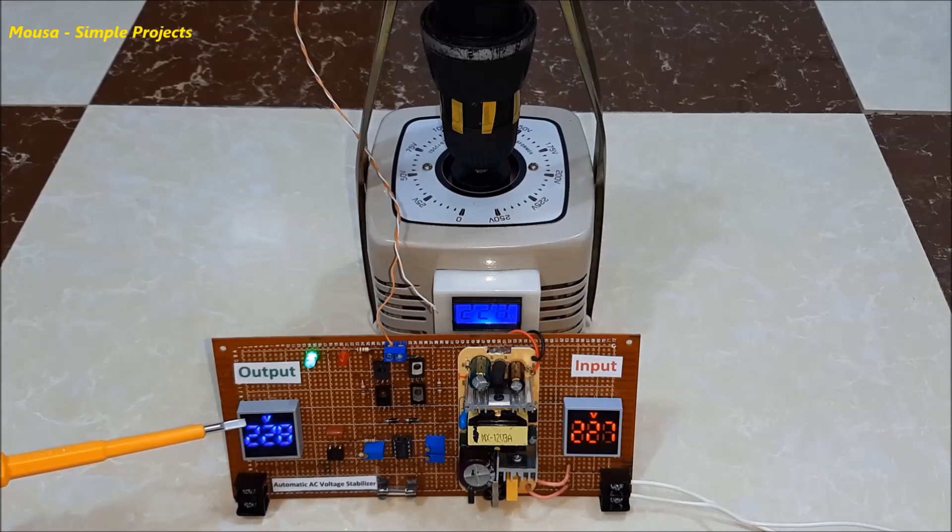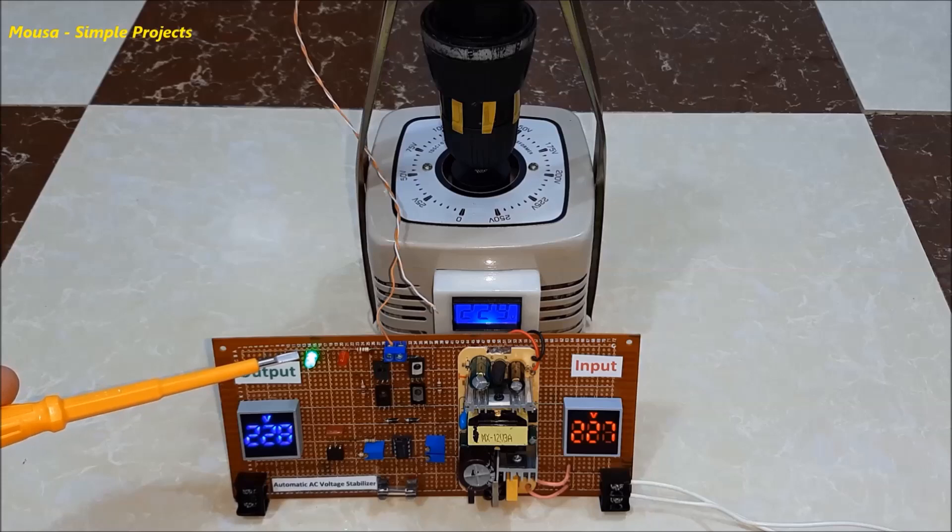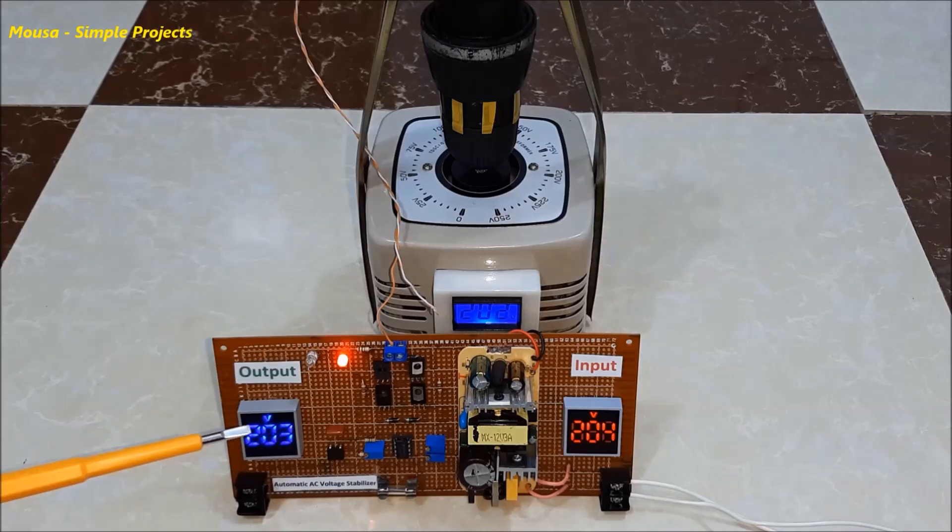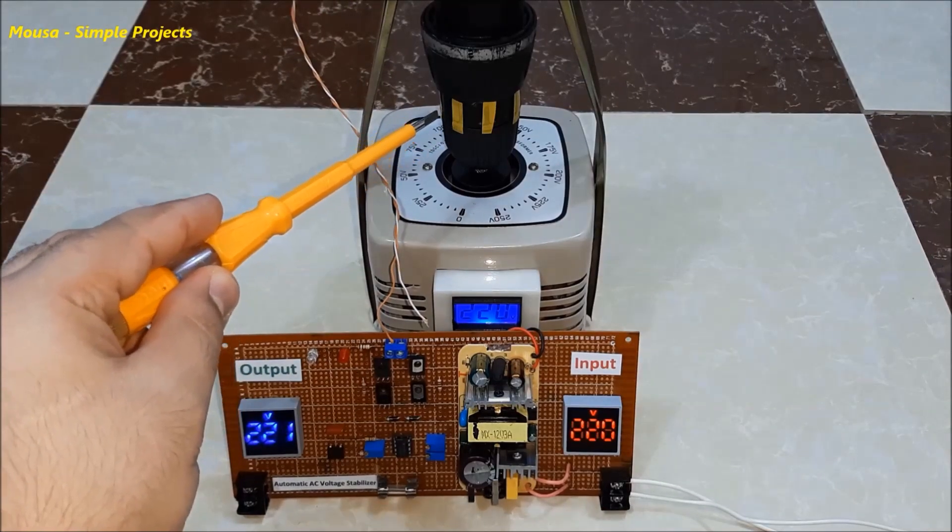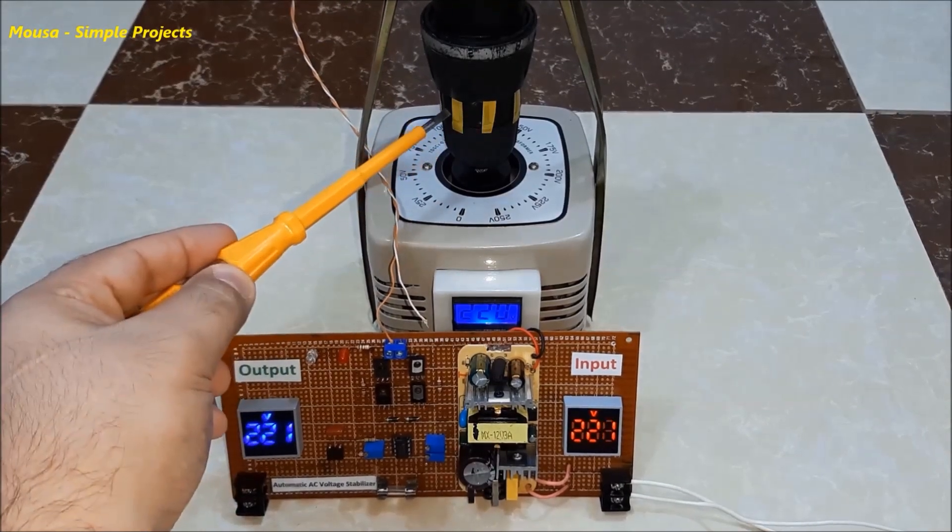When the output voltage is high, the green LED turns on. And when the output voltage is low, the red LED turns on. I used some yellow tape on the motor shaft to make it easier to see the rotation of the shaft.